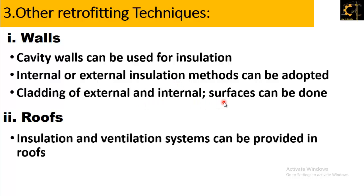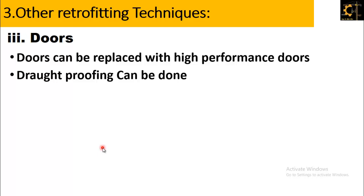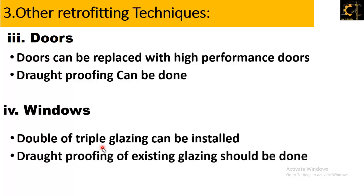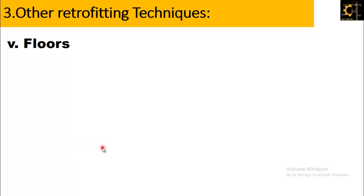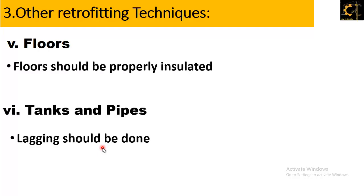For roofs, retrofitting involves insulation and ventilation systems. For doors, they can be replaced with high-performance doors and draught proofing can be done. For windows, double or triple glazing can be installed and draught proofing of existing glazing should be done. For floors, proper insulation should be provided, and for tanks and pipes, lagging should be done.